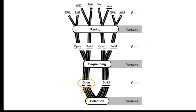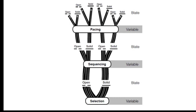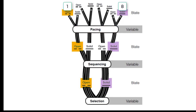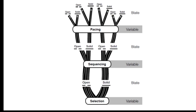Starting on the far left, we see a teacher who chooses an open selection, then also an open sequence, and then also an open pacing — so all three variables are open. Now let's take the opposite extreme: moving to the far right, you can see a teacher who's chosen a solid state in terms of selection, a solid state in terms of sequencing, and a solid state in terms of pacing. So there you have the two extreme options. But in between those two extremes are six other options, which are very interesting in the way that they operate.